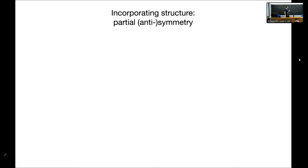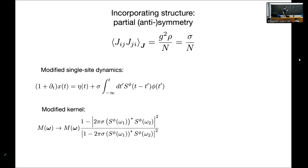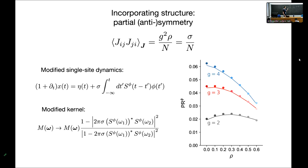A nice thing about this calculation is that it provides a clear path for incorporating structure into the weights. As one example, you can introduce correlations between reciprocal pairs of weights with a parameter rho. Positive rho is like partially symmetric weights, negative rho is partially anti-symmetric, and rho=1 would be exactly symmetric. This modifies both the single-site dynamics and the kernel relevant to dimensionality. There's a non-trivial relationship: for small G, increasing symmetry initially increases dimension, whereas for higher G, increasing symmetry decreases dimension.